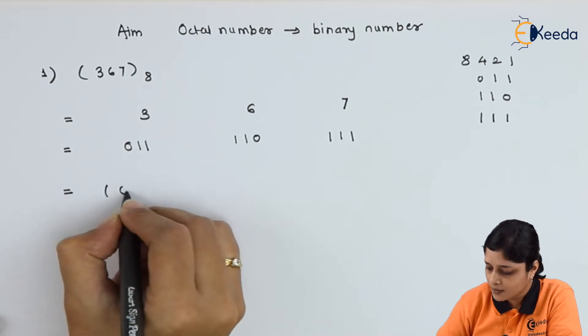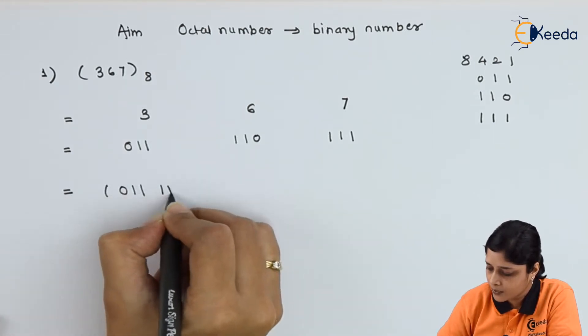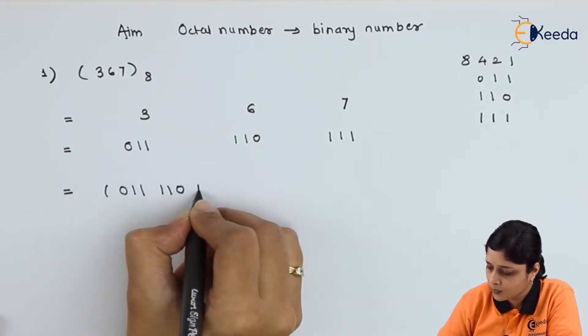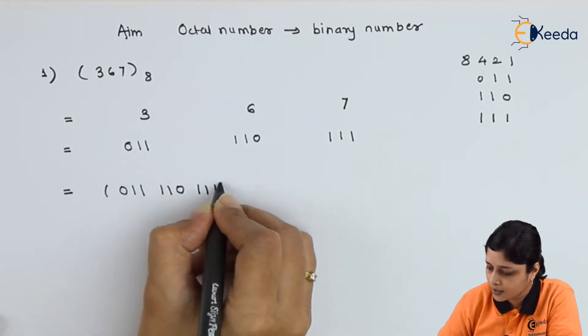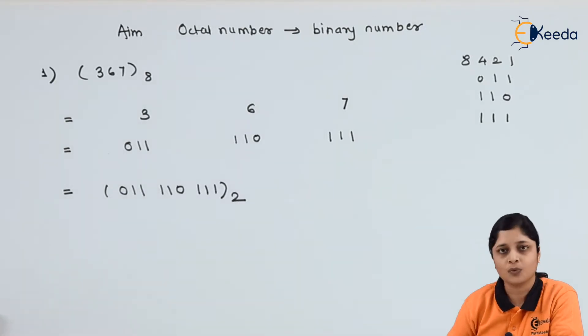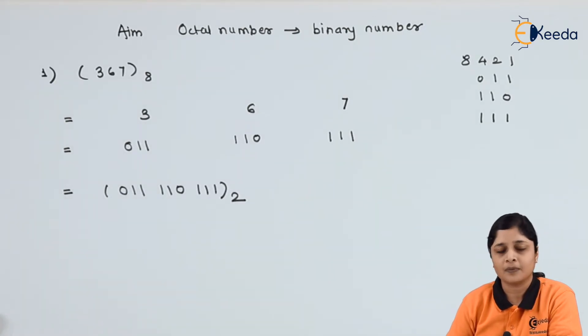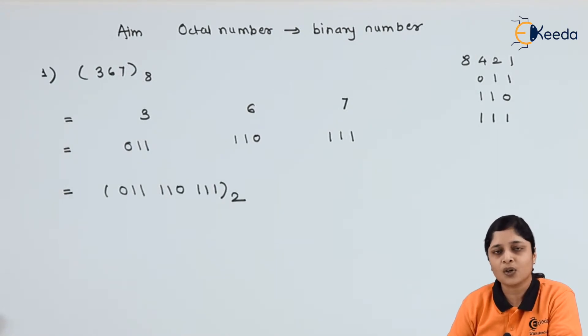Finally you can write 0 1 1  1 1 0  1 1 1 to the base 2. In binary number, this will give you the final answer for the conversion of octal number system to binary number system. Let's take a second example.